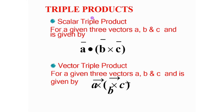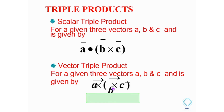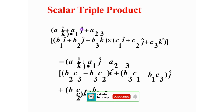A triple product. The triple product — both vector triple product and scalar triple product. Given vectors A, B, and C, the scalar triple product is defined. The scalar triple product involves the determinant.